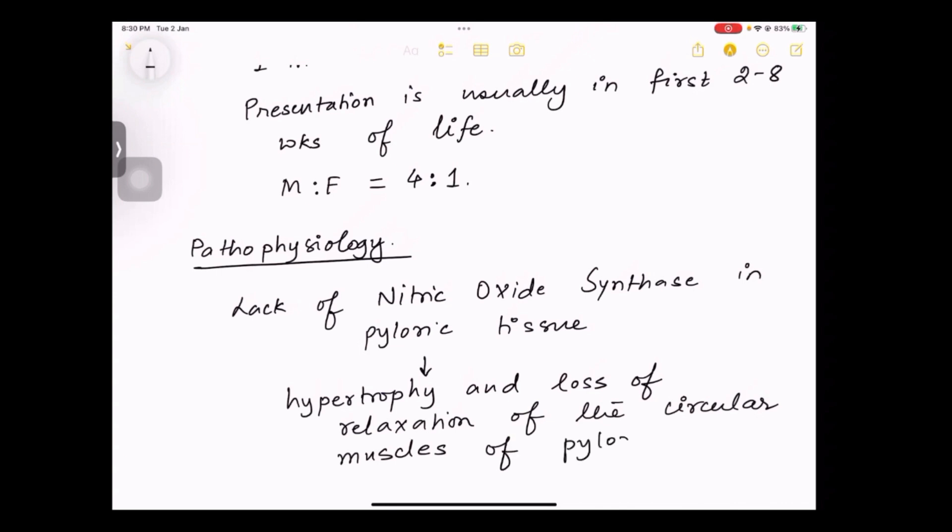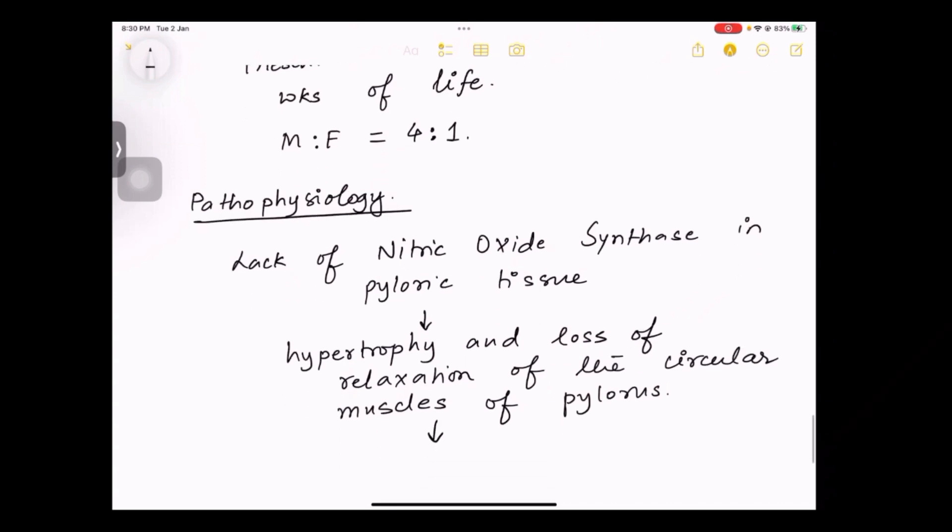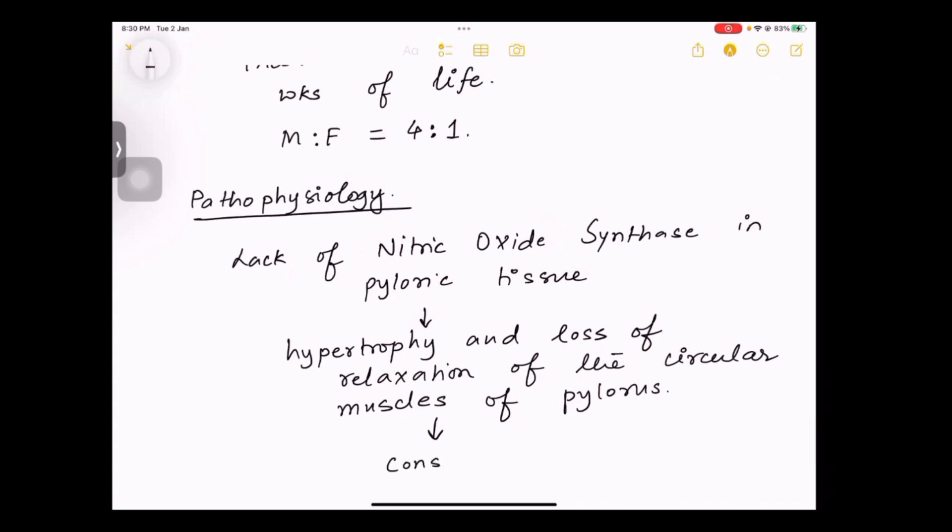As a result there will be constriction and gastric outlet obstruction because relaxation is not happening properly. This will lead to accumulation of food products in the pylorus of the stomach causing non-bilious vomiting. The gastric contents will come out.